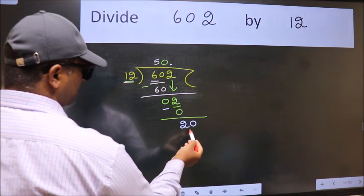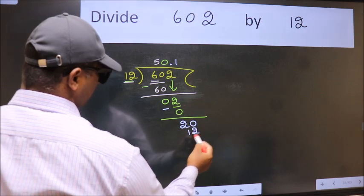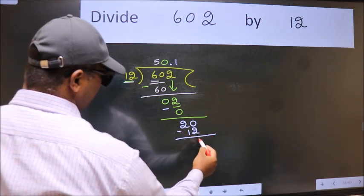So 20. A number close to 20 in 12 table is 12 once 12. Now we subtract. We get 8.